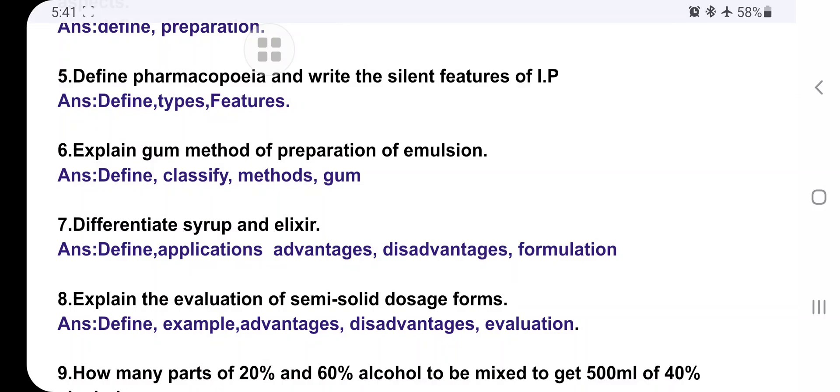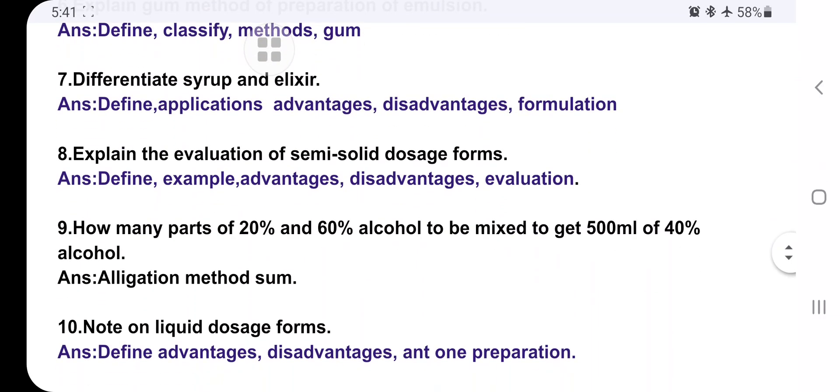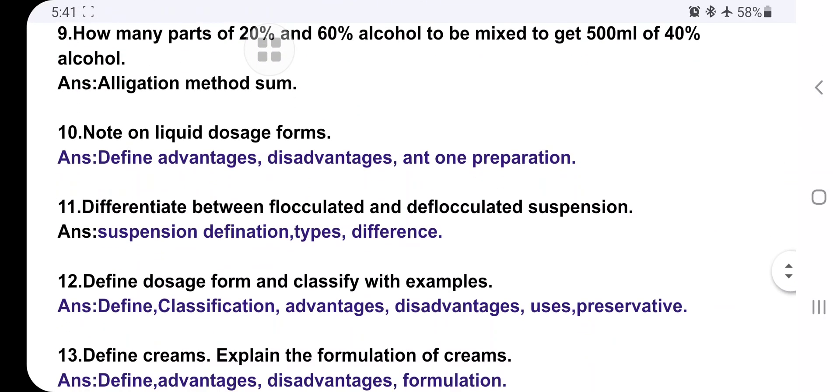Differentiate between syrups and elixir - this is also very important. Evaluation of semi-solid dosage form: Write advantages, disadvantages, and evaluation techniques. Then, how many parts of 20% and 60% alcohol to be mixed to get final ml of 40% alcohol? Allegation method. Some sum is fixed here - you practice this sum, you will get five marks for allegation method.